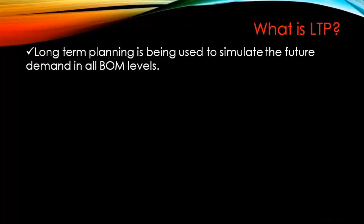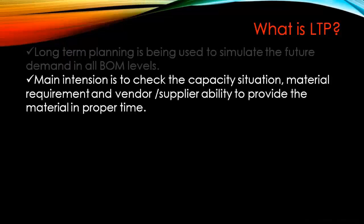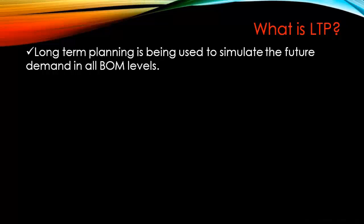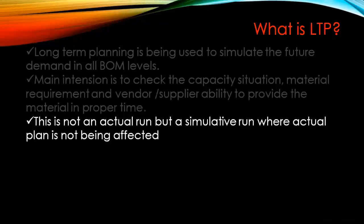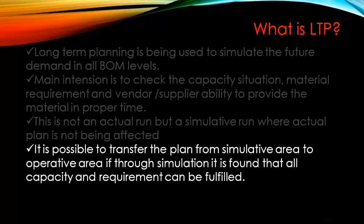Long-term planning is used to simulate future demand at all BOM levels. When planning for a finished goods top-level product code, we also plan the same thing for child BOM levels, so we have enough capacity, resources, and raw materials. The main intention is to check the capacity situation, material requirements, and vendor supply ability to provide material in proper time. This is not an actual run but a simulated run where the actual plan is not affected.